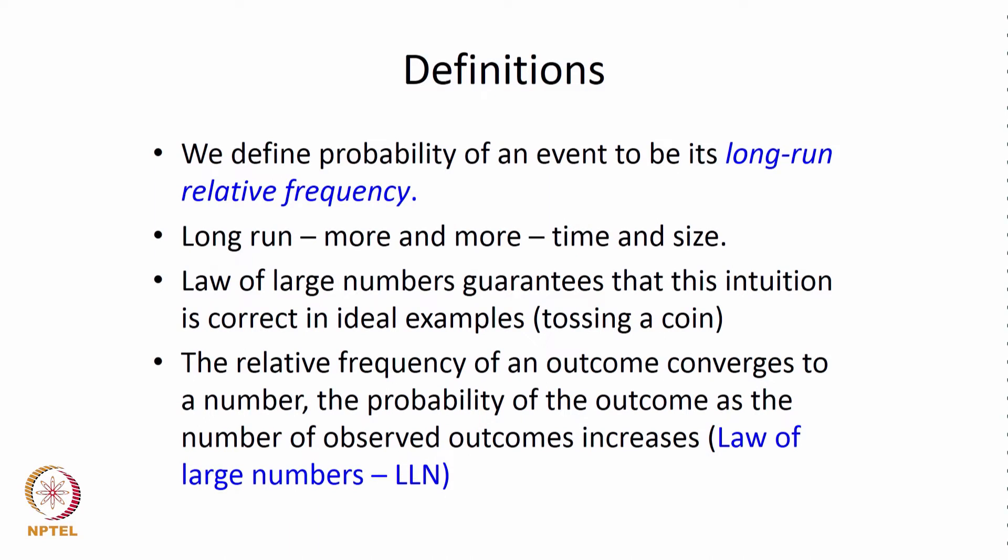We will look at some definitions and slowly try to answer these questions. What is probability? Probability of an event is defined as its long-run relative frequency. Frequency is an occurrence, and long-run implies more and more — it also means time, or it could mean size. There is a very important concept called the law of large numbers. The law of large numbers guarantees that this intuition is correct in ideal examples such as tossing a coin. As we keep tossing a coin a large number of times, we observe that 50 percent of the times it is heads and 50 percent tails. Relative frequency of an outcome converges to a number — which is the probability of the outcome — as the number of observed outcomes increases. This is called the law of large numbers.